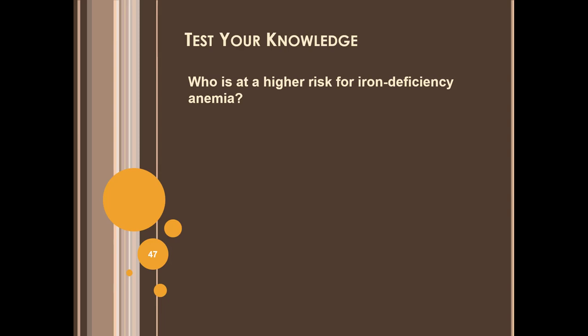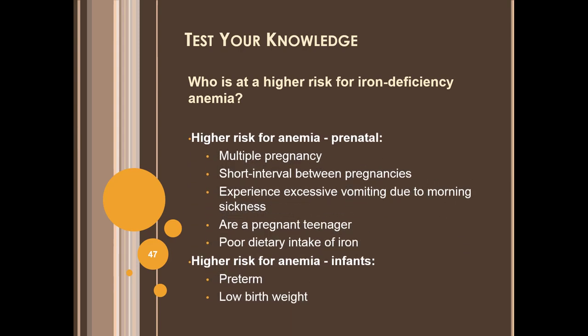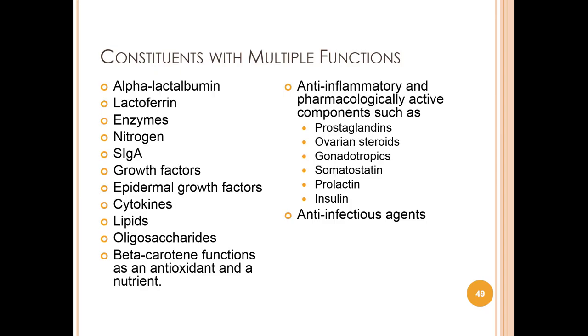Who is at higher risk for iron deficiency anemia? Prenatal individuals at higher risk include those with a multiple pregnancy, short interval between pregnancies, excessive vomiting due to morning sickness, pregnant teens, and those with a poor dietary intake of iron. Infants at higher risk include preterm infants and those with low birth weight. This slide also highlights all of the constituents in human milk that have multiple functions.